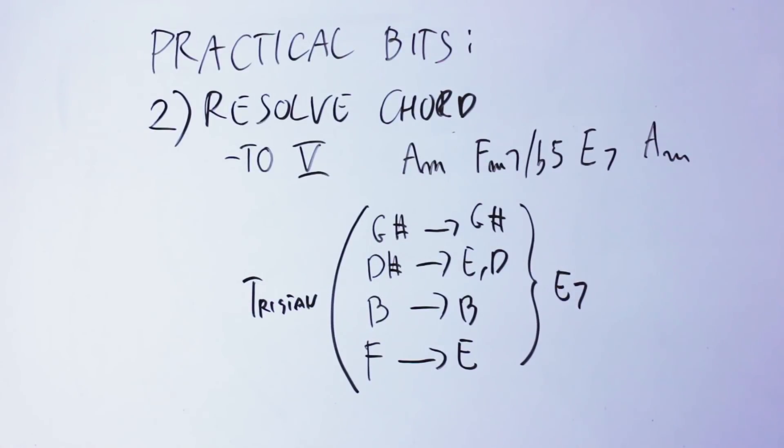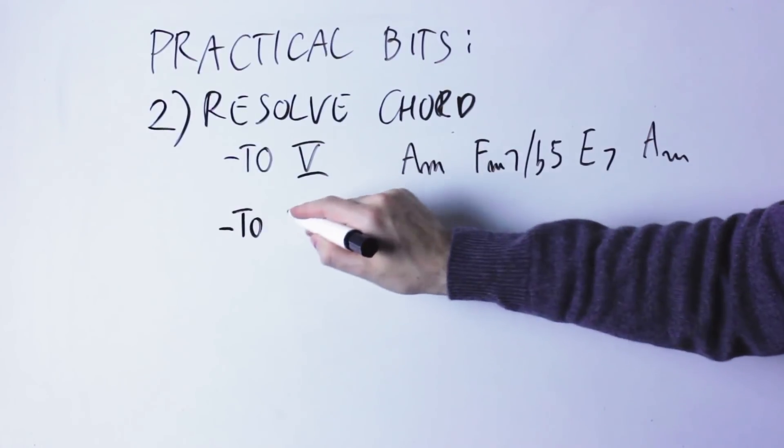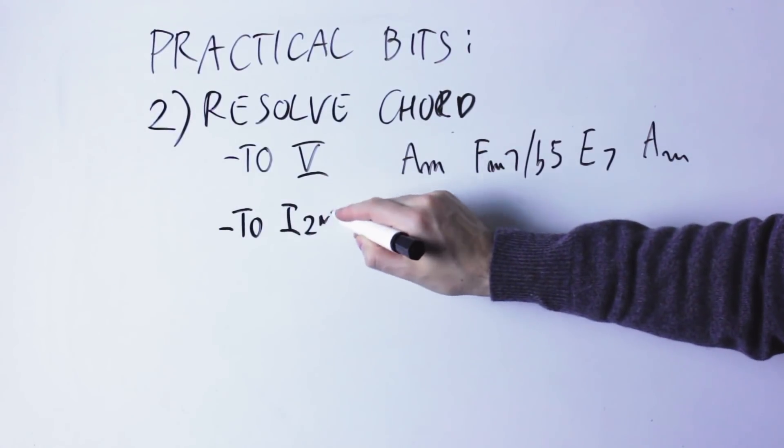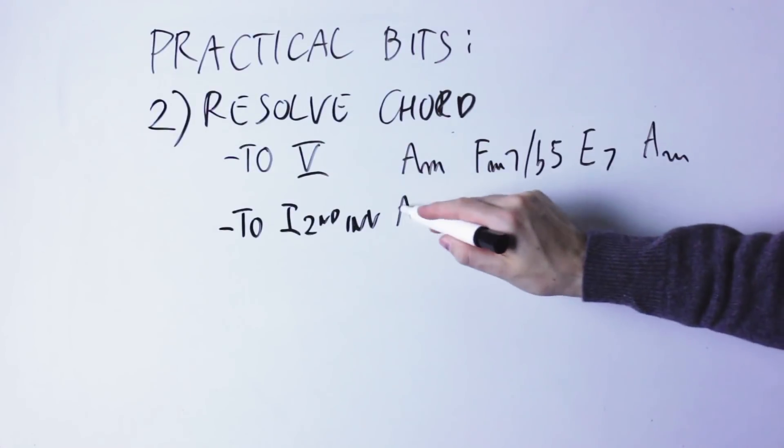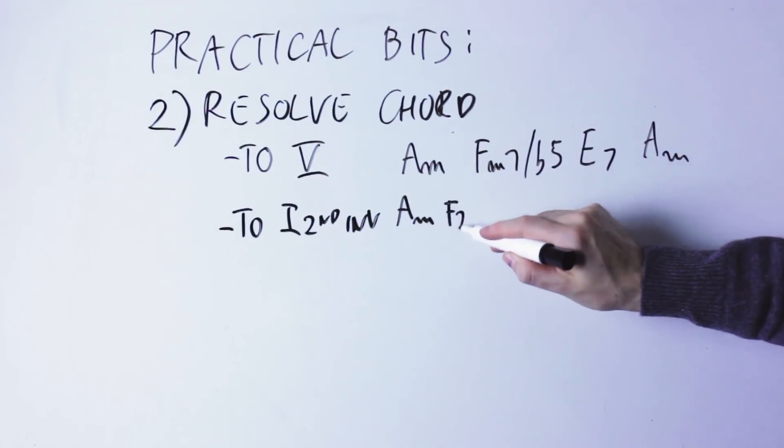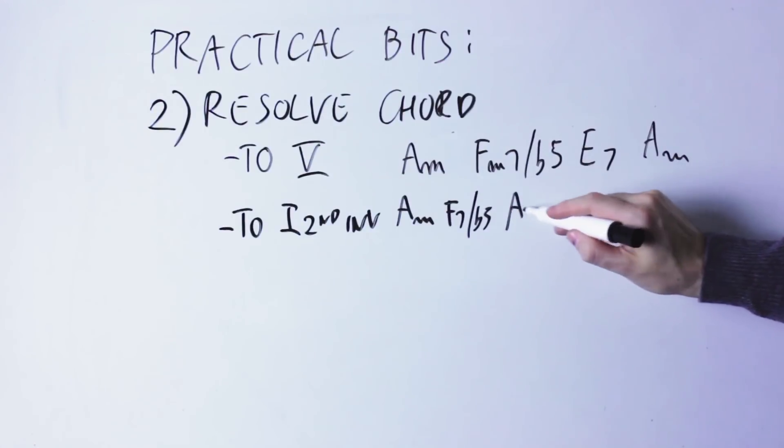Another possibility is to resolve the Tristan chord to the first chord of the key in second inversion, and then onto the dominant chord. So in this case, you'll have A minor, the Tristan chord...